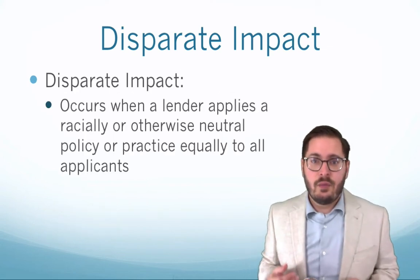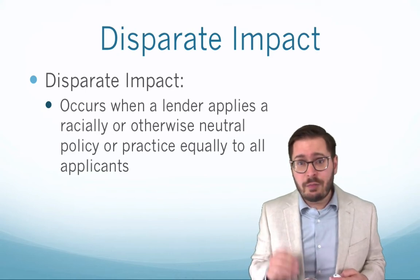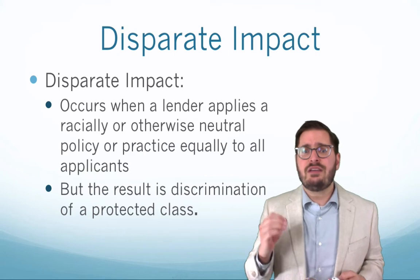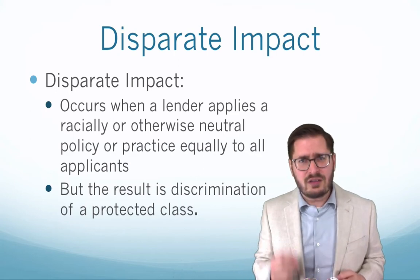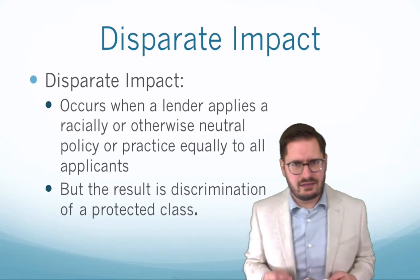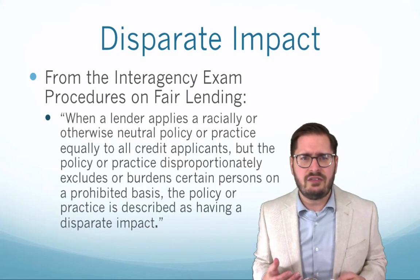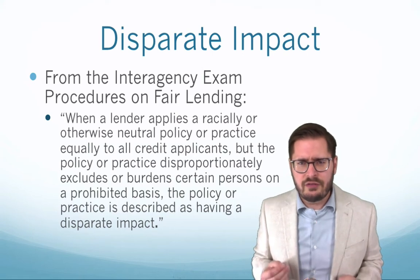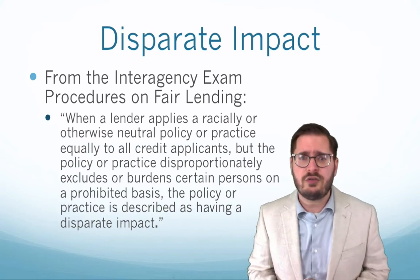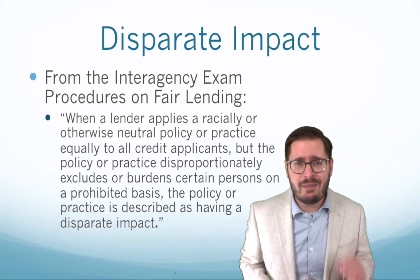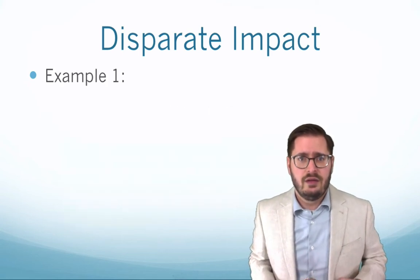Now what is disparate impact? Disparate impact occurs when a lender applies a racially or otherwise neutral policy or practice equally to all applicants, but the result is discrimination of a protected class. From the interagency exam procedures, they explain it as: when a lender applies a racially or otherwise neutral policy or practice equally to all credit applicants, but the policy or practice disproportionately excludes or burdens certain persons on a prohibited basis — that's the protected class — the policy or practice is described as having disparate impact. That's the actual definition.